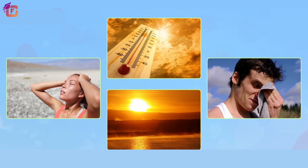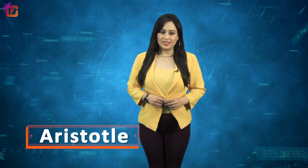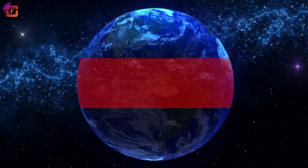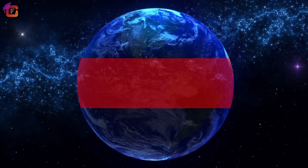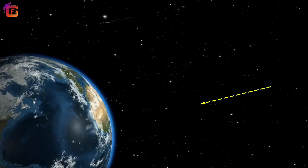The torrid zone is located geographically between 23.5 degrees north latitude and 23.5 degrees south latitude. The word torrid zone was first used by Greek scientist Aristotle to define the area of the earth closest to the equator. Aristotle assumed that this area was too hot for human habitation since the sun's rays targeted this region from directly above. The torrid zone has a different number of topographic features affecting the climate.